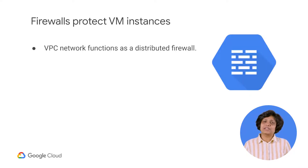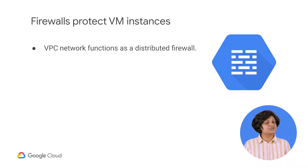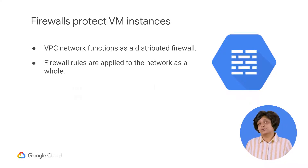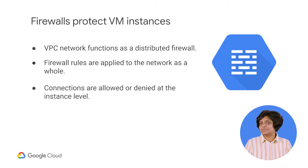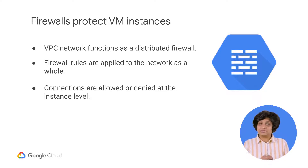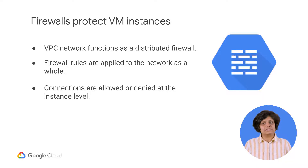Essentially, every VPC network functions as a distributed firewall. Although firewall rules are applied to the network as a whole, connections are allowed or denied at the instance level. You can think of the firewall as existing not only between your instances and other networks, but between individual instances within the same network.